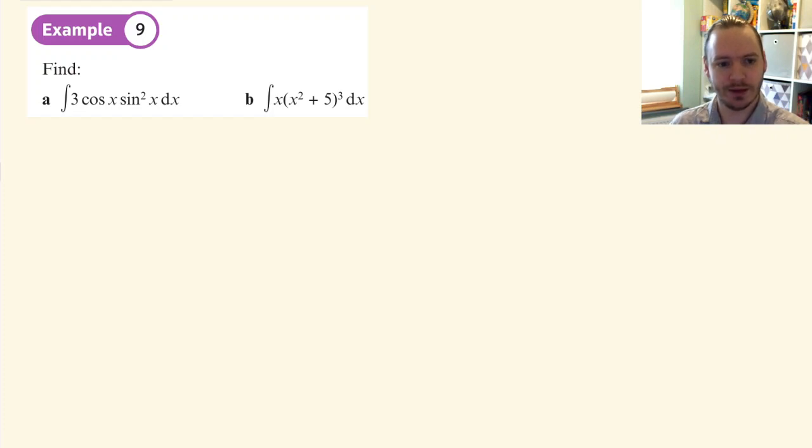Therefore we can use that to unwind more complicated integration questions. In the first one, I have cos(x) and sin^2(x)—this looks like a function and its derivative. In the second one, I've got (x^2 + 5)^3 and the x in front is its derivative. So these look like answers to chain rule questions.